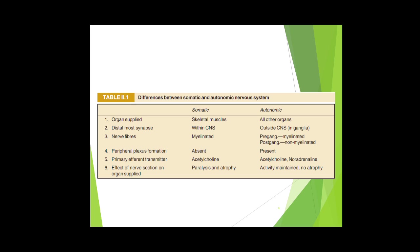Regarding the effect of nerve section on organs: with the somatic system there can be paralysis or atrophy, whereas with the autonomic nervous system the activity of the organ is maintained — there is no atrophy. These are the major differences between the somatic nervous system and autonomic nervous system.